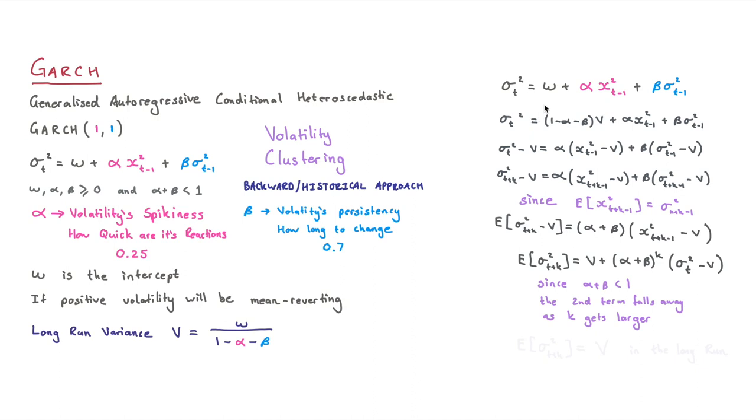Essentially, what we're doing is we're replacing this w intercept with V(1 - α - β), which is what we're doing over there. In the second line, we're just expanding that out. So we're getting V times one, and then we're subtracting it on our left-hand side.